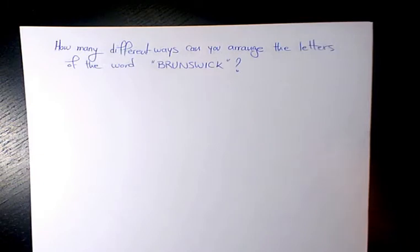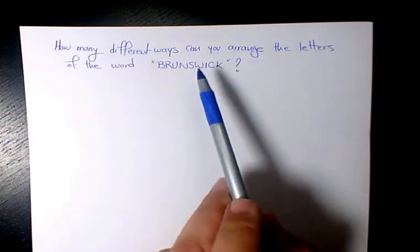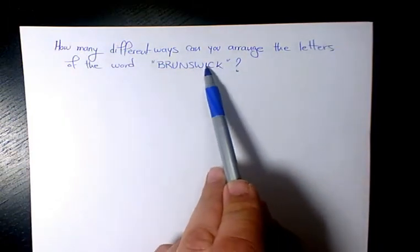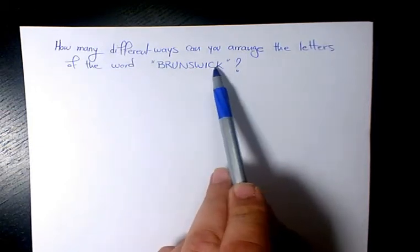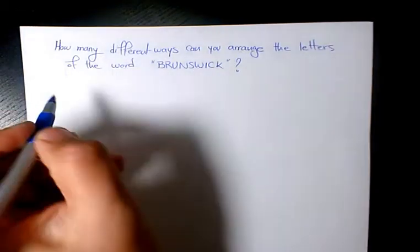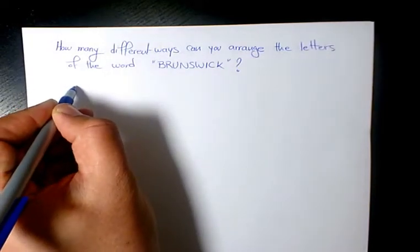So here we have the word BRUNSWICK. Let's count how many letters: one, two, three, four, five, six, seven, eight, nine letters. And as you see here, none of them is repeating, so we have 9 factorial ways.